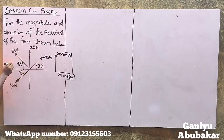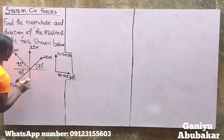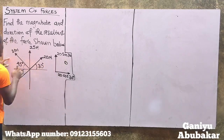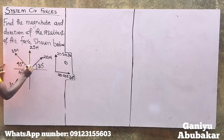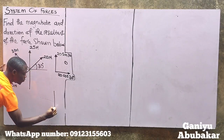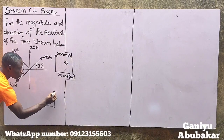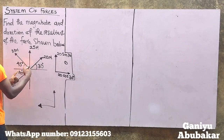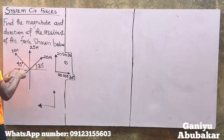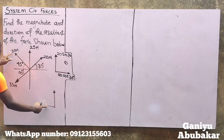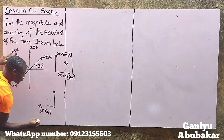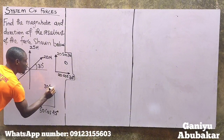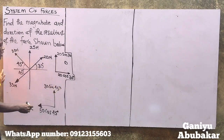For force two, let me draw the component diagram. The force is going outward, and the angle is lying on the horizontal line, so that becomes cosine. The horizontal component is 30 cos 45° and the vertical component is 30 sin 45°. I'm done resolving force two.